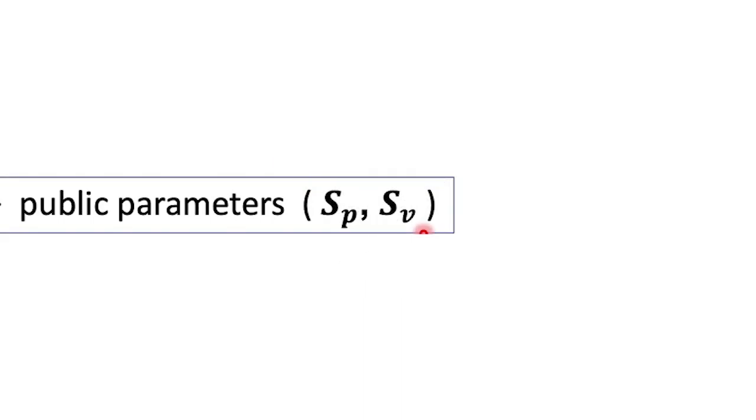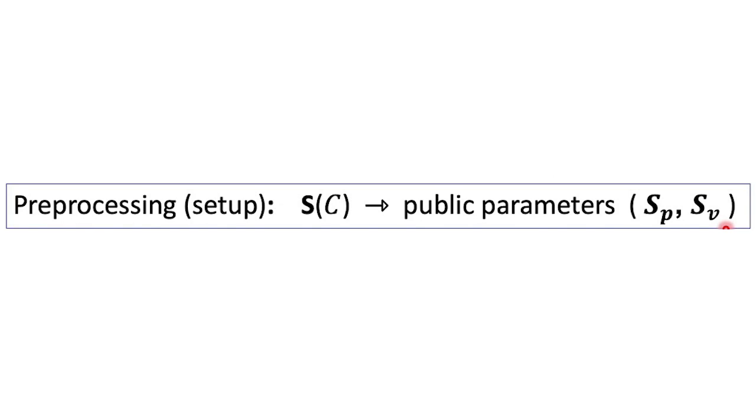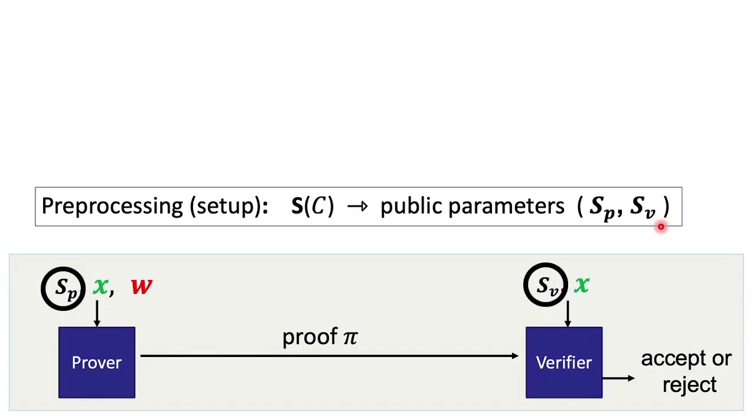In order for the verifier to be able to decode the received proof, you need to have context. This is where a public parameter comes in, which is known as a pre-processing argument system. Both the prover and verifier separately receive a public parameter which is generated by the pre-processing setup in an initial setup phase.